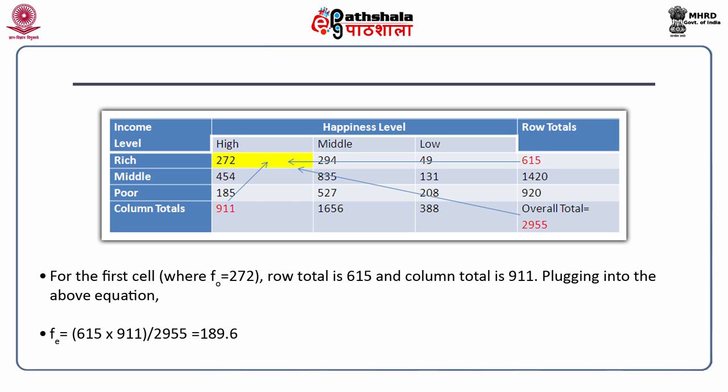You can represent this in a table where, in parentheses you have FE while outside the parentheses is FO — the observed frequencies. For example, 272 is the observed frequency while the expected frequency is 189.6, calculated from the column total and row total.